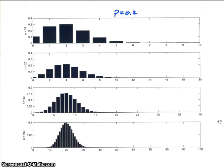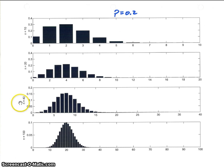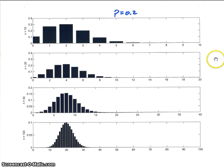In this next set, I've kept the probability the same at 0.2, but changed the number of trials. The number of trials on the first one is 10, the second is 20, the third is 40, and the last is 100. You can see the general shape of the plot, and the limit on each of these is equal to the number of trials, so you can get an idea of what the shape looks like.